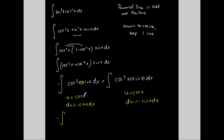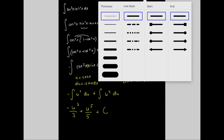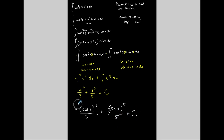Now I substitute: u equals cosine of x, so du equals negative sine x dx. Cosine squared becomes u squared, and cosine to the fourth becomes u to the fourth. After integrating using basic power rules, I get negative u cubed over three plus u to the fifth over five plus C. Back-substituting u equals cosine x gives: negative cosine to the third x over three plus cosine to the fifth x over five plus C.